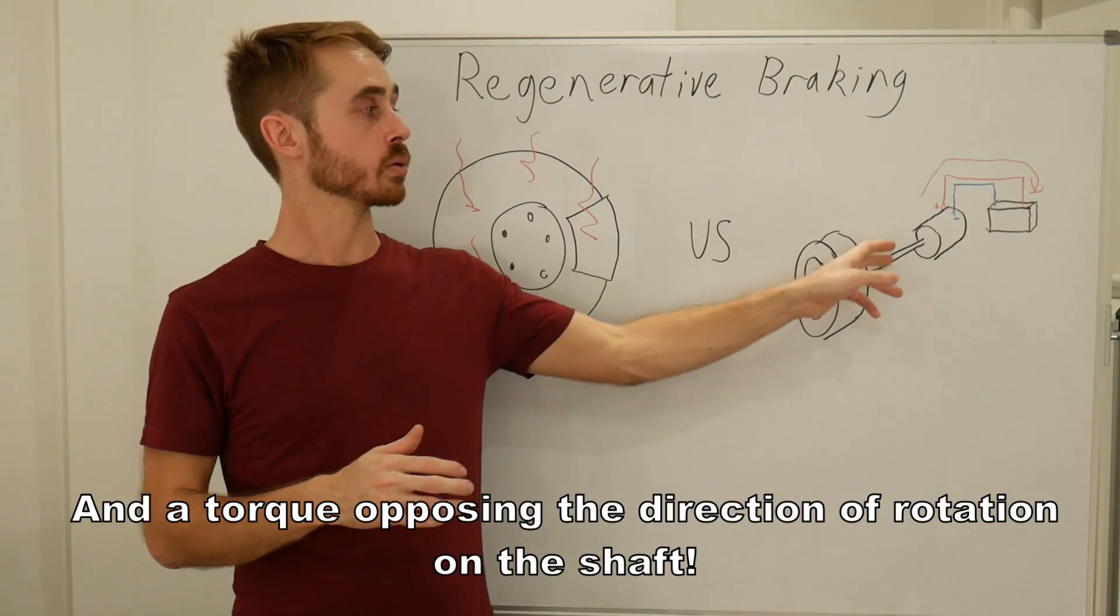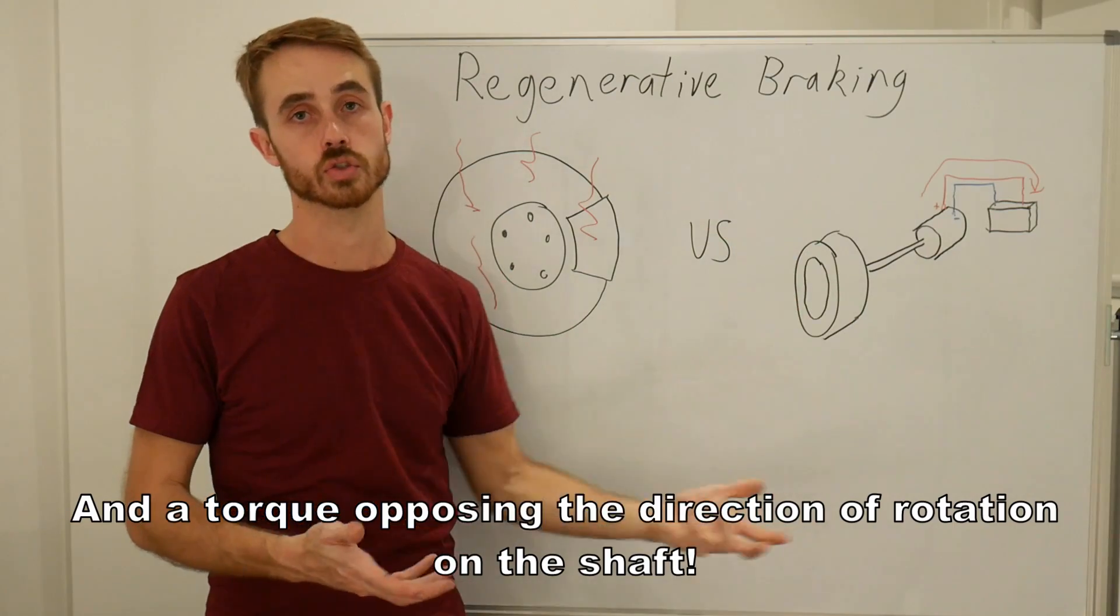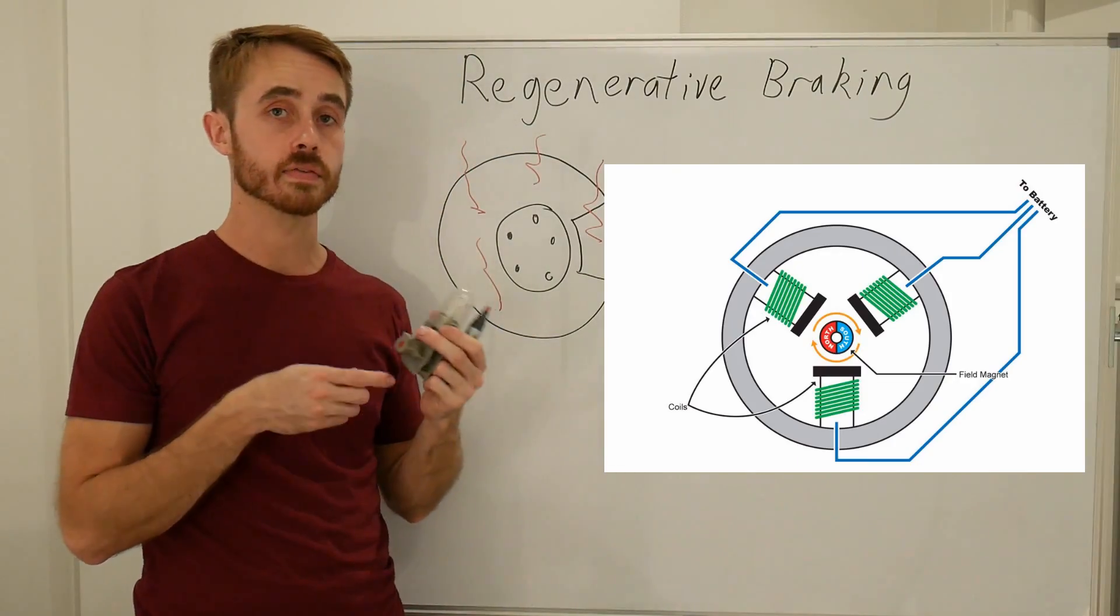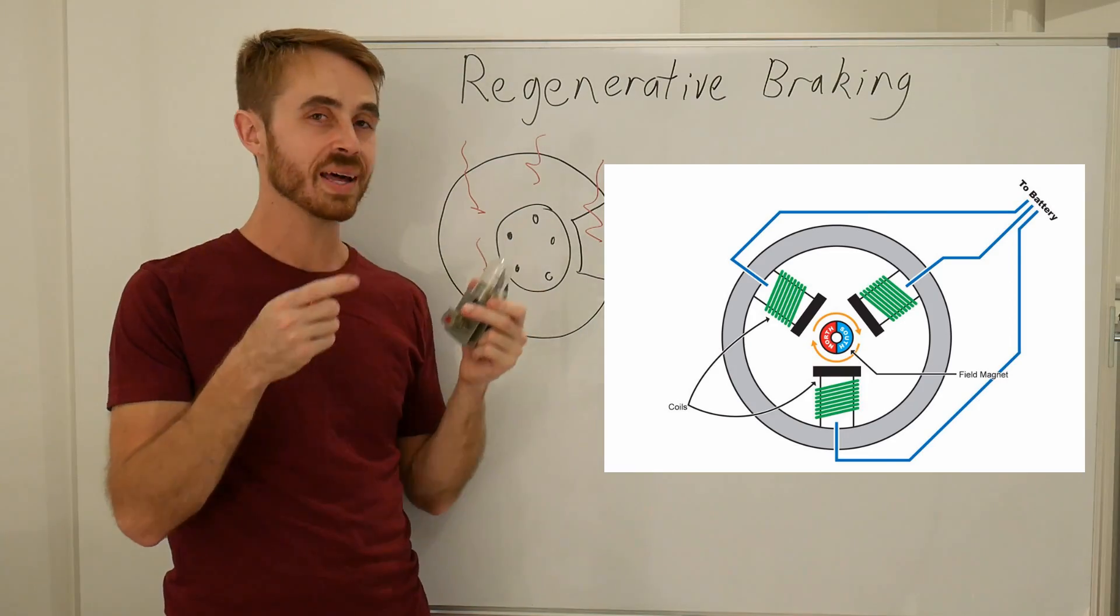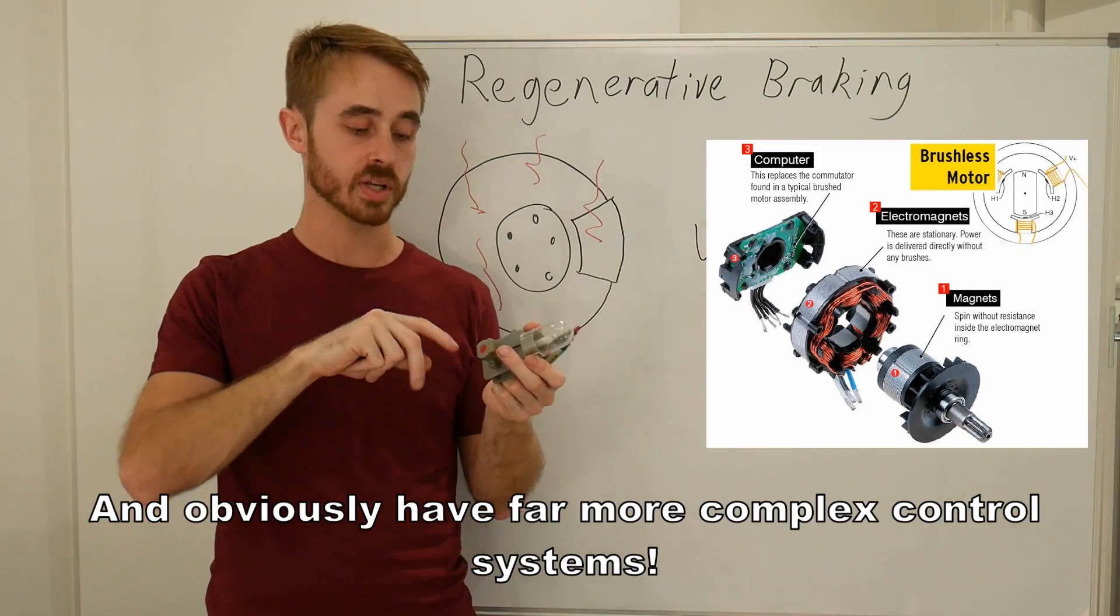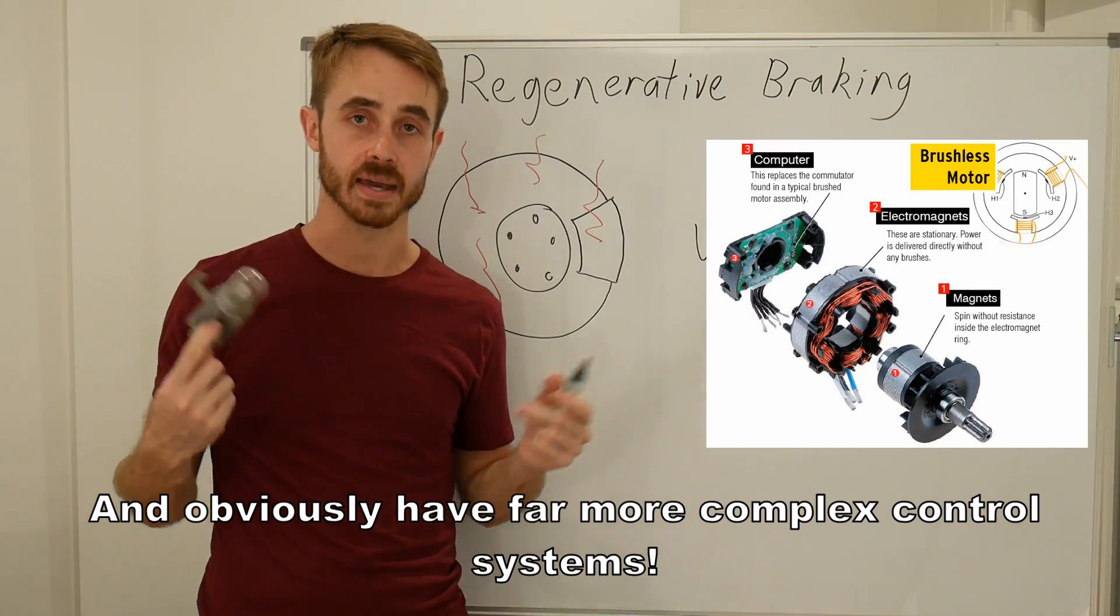So to sum up that bit, basically, if you spin a motor, you'll end up with a current coming out the back of it, which you can then harvest to a battery and store over there. Now, obviously, a lot of car motors are more complicated than this small DC motor I've got here, but they still run on the same basic principle of electromagnetic coils and induction, and that's why we end up with a similar effect.